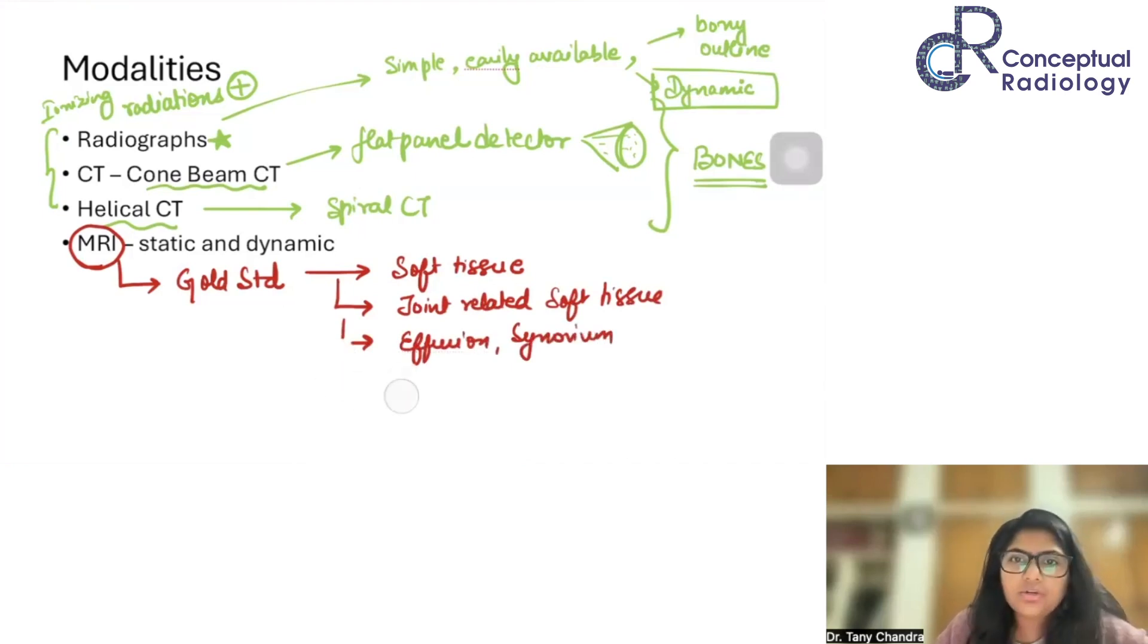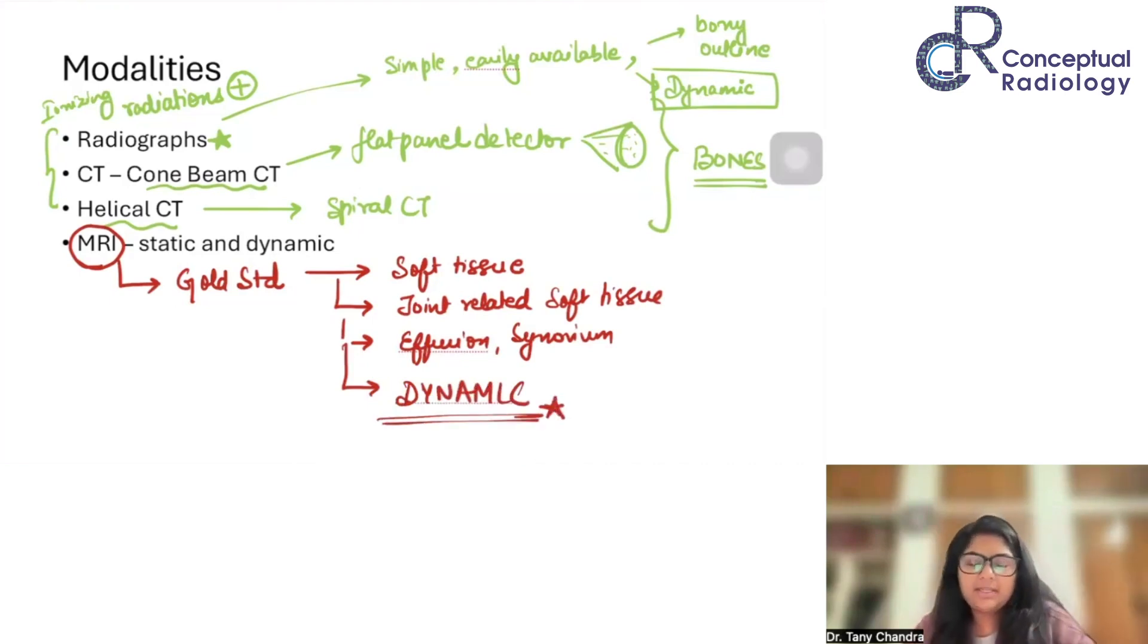Next, it is also dynamic. Now there are two things which are dynamic here. One is radiographs and the other is an MR imaging. In MR imaging, like we had once seen while discussing cardiac imaging, that we can do a CINE. We can also do dynamic imaging of the temporomandibular joint. Now, there is an upcoming role which has been described for ultrasound.